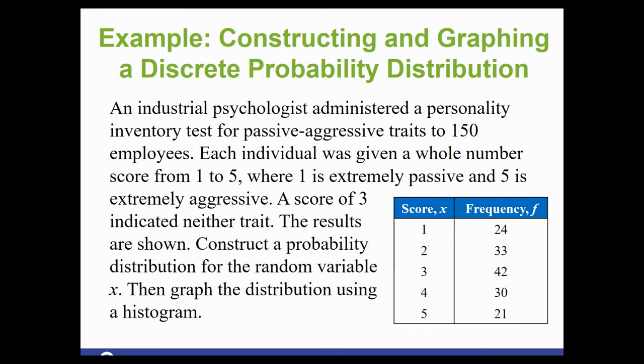So we're going to make our first graph. This one says an industrial psychologist administered a personality inventory test for passive aggressive traits to 150 employees. Each individual was given a whole number score from 1 to 5, where 1 is extremely passive and 5 is extremely aggressive. A score of 3 indicated neither trait. The results are shown. Construct a probability distribution for the random variable x. Then graph the distribution using a histogram.